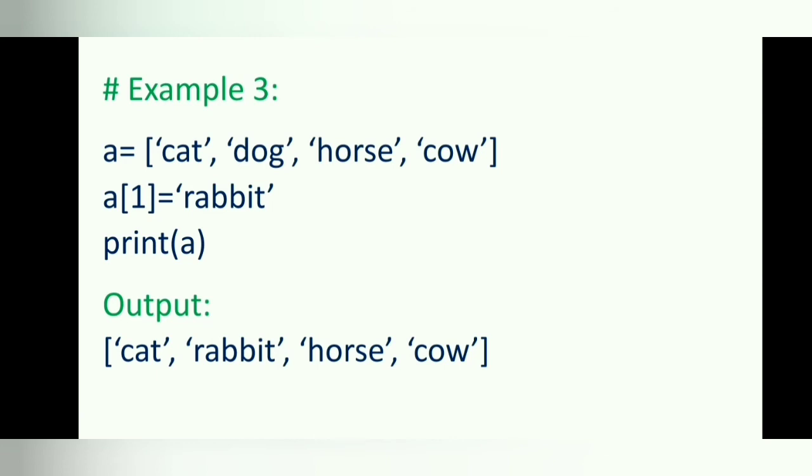In this example, a list [cat, dog, horse, cow] is assigned to the variable a. In the next statement, we modify the list by assigning the value 'rabbit' at index position 1. The following print statement will display the modified list: [cat, rabbit, horse, cow].